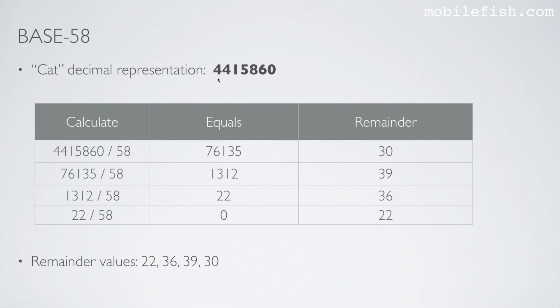You will see again the decimal representation of the word CAT. If you take this decimal representation and write it over here, then you divide it by 58 — because we are doing a base58 encoding — which equals this value, and this is the remainder.